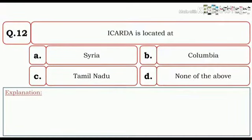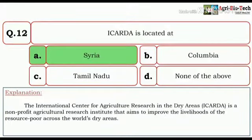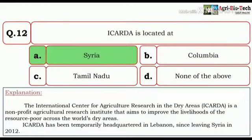The International Center for Agriculture Research in the Dry Areas is a non-profit agricultural research institute that aims to improve the livelihoods of the resource poor across the world's dry areas. It has been temporarily headquartered in Lebanon since leaving Syria in 2012. So here the correct option would be Syria.